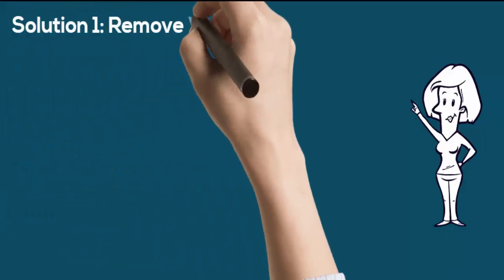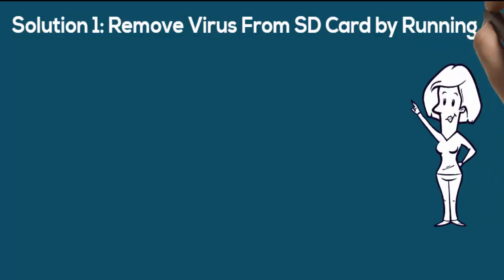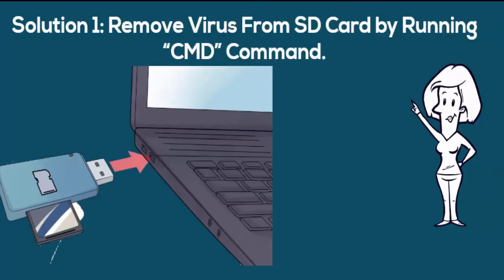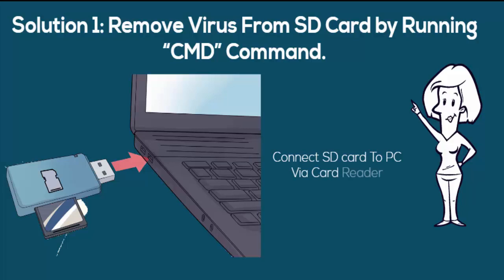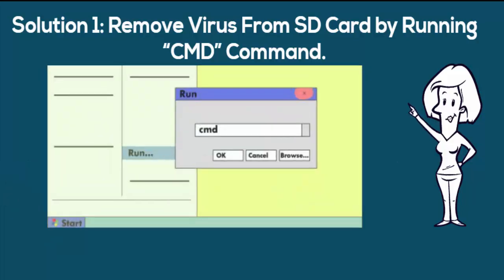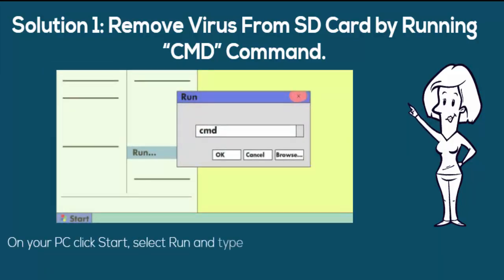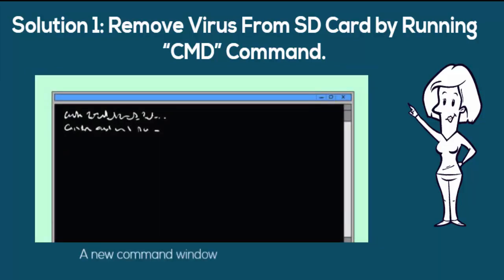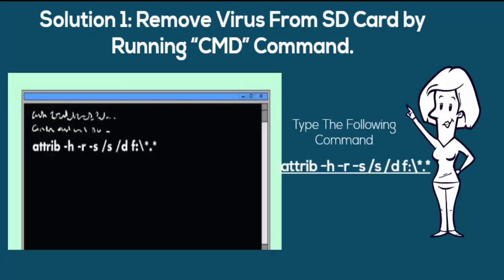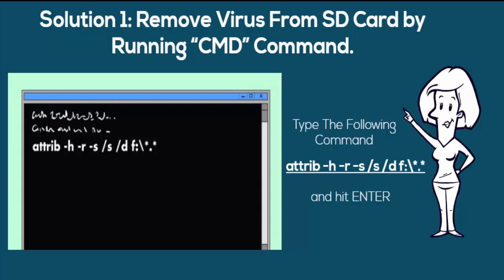Solution 1: Remove virus from SD card by running a CMD command. Connect your infected SD card to your PC with the help of a card reader. On your computer, click Start, select Run, type CMD and hit Enter. A new command window will open. Now type the following command and hit Enter. Note that F is the drive letter name of the SD card — you must type your SD card's drive letter name as shown on your PC. After the process, you can access your files from the SD card.